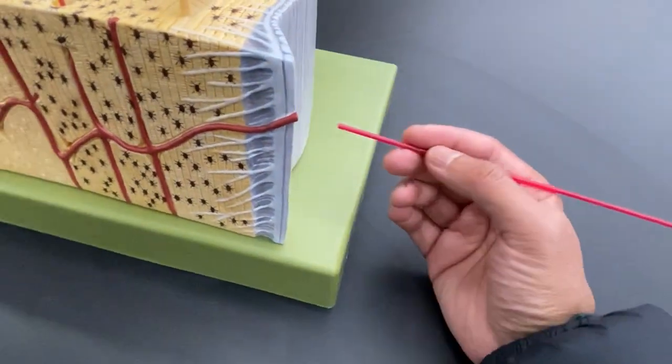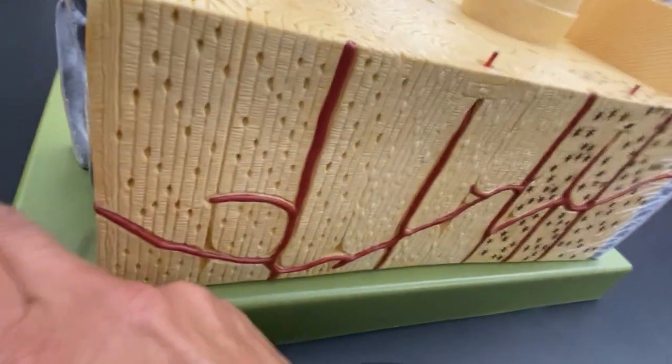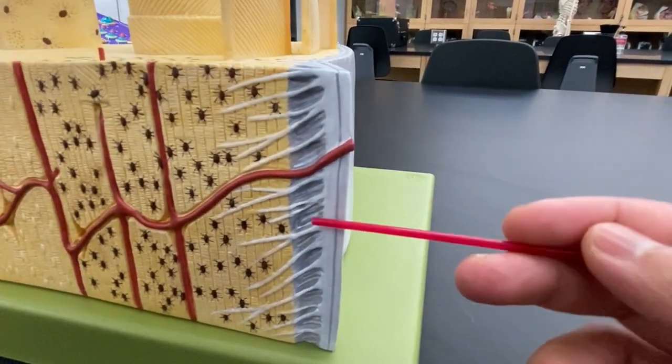Where we make and break bone are in the periosteum and the endosteum, and those are your osteoblasts that make bone, and osteoclasts that will break down bone.